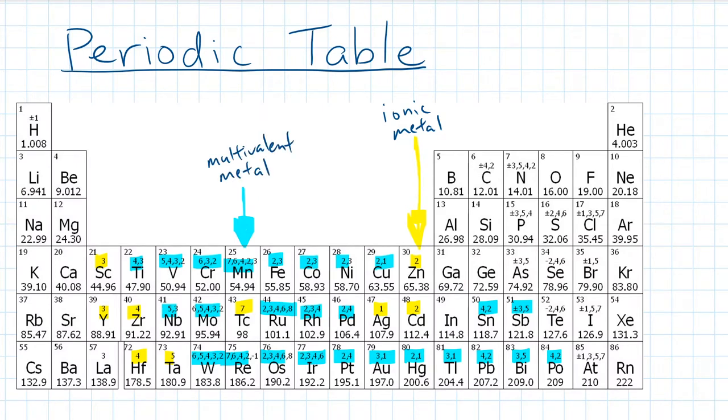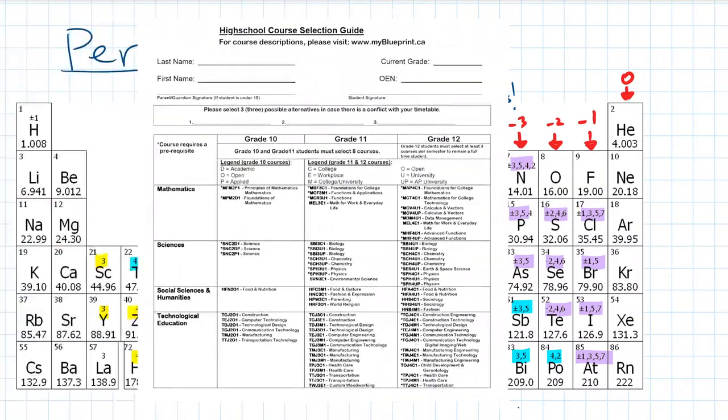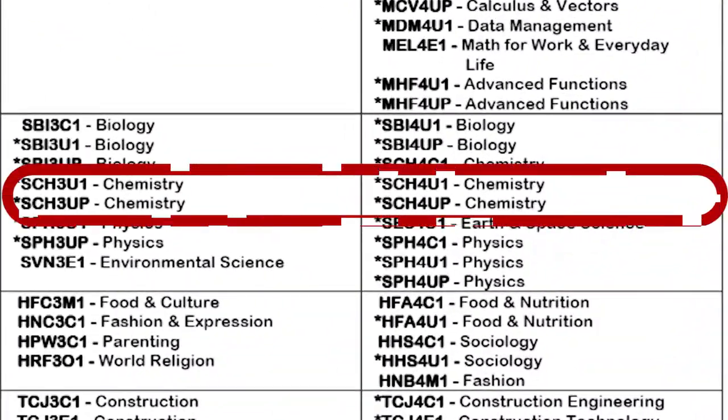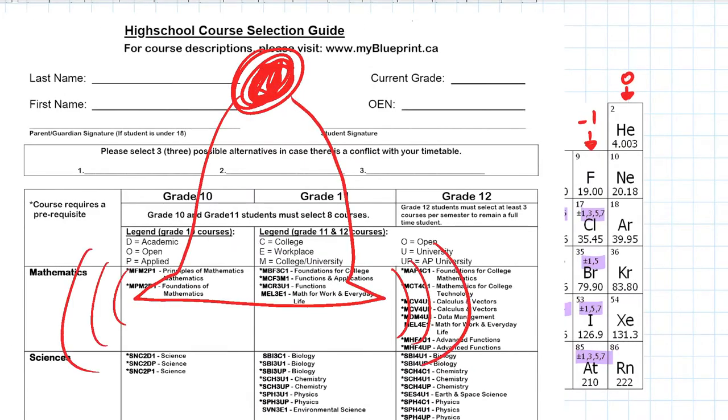You might also notice that some non-metals also have multiple numbers written above the symbol. But for the purposes of grade 10, let's just ignore it for now. The details of that madness will also be covered in future grades, so if you really want to know why this happens and what to do with it, please click like and subscribe to grade 11 chemistry and grade 12 chemistry. Also, smash that bell button if you happen to see one on your course selection paper as well.